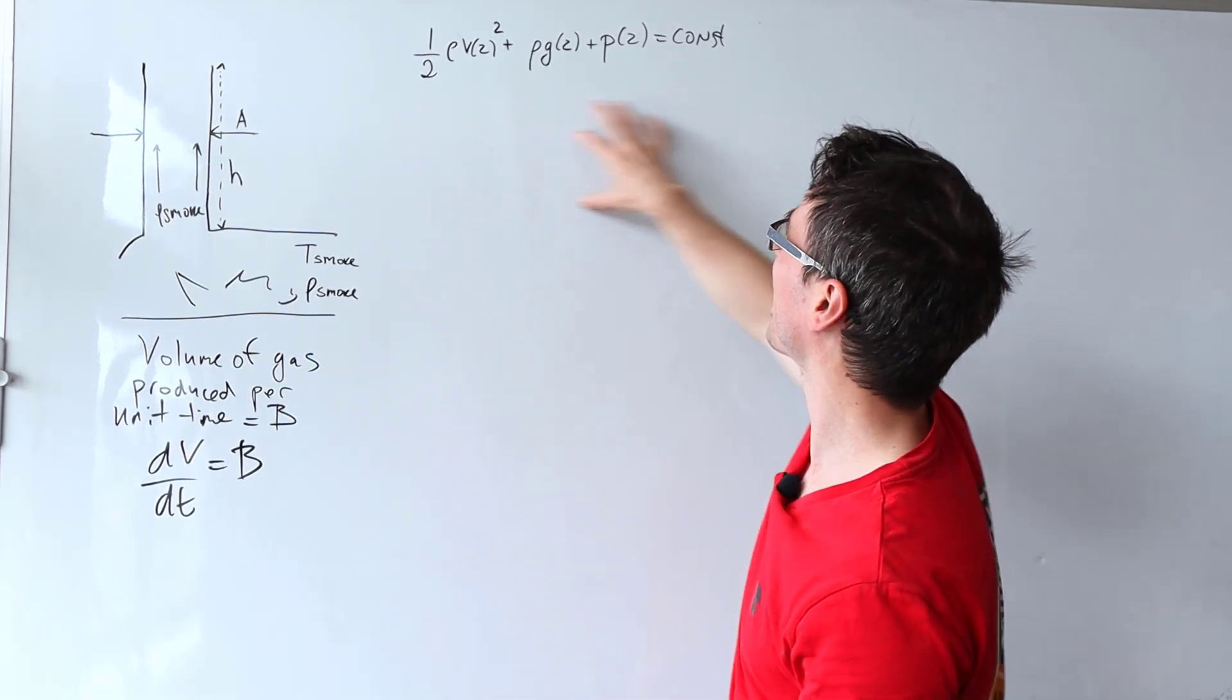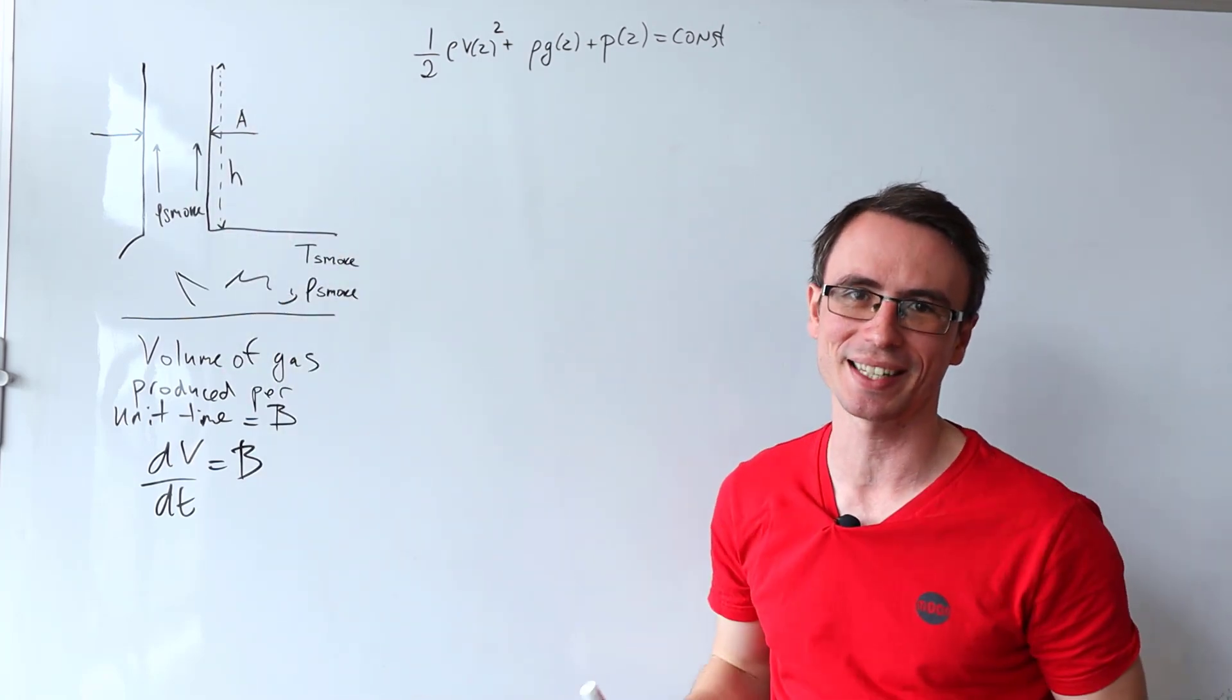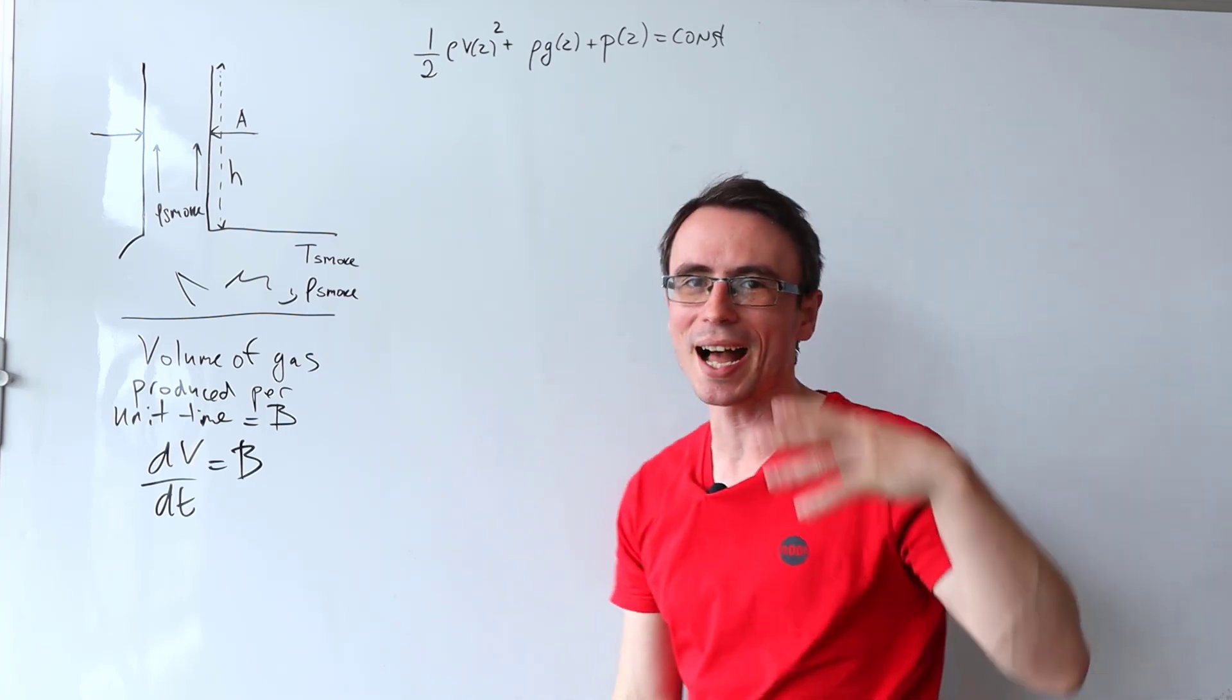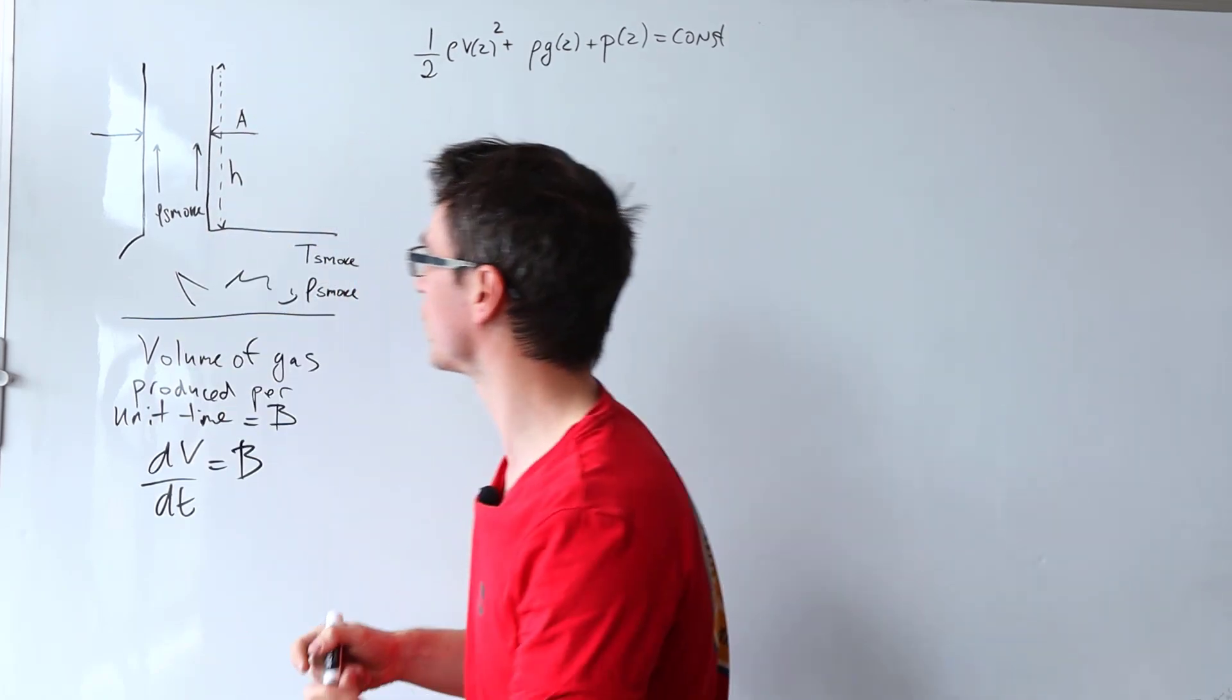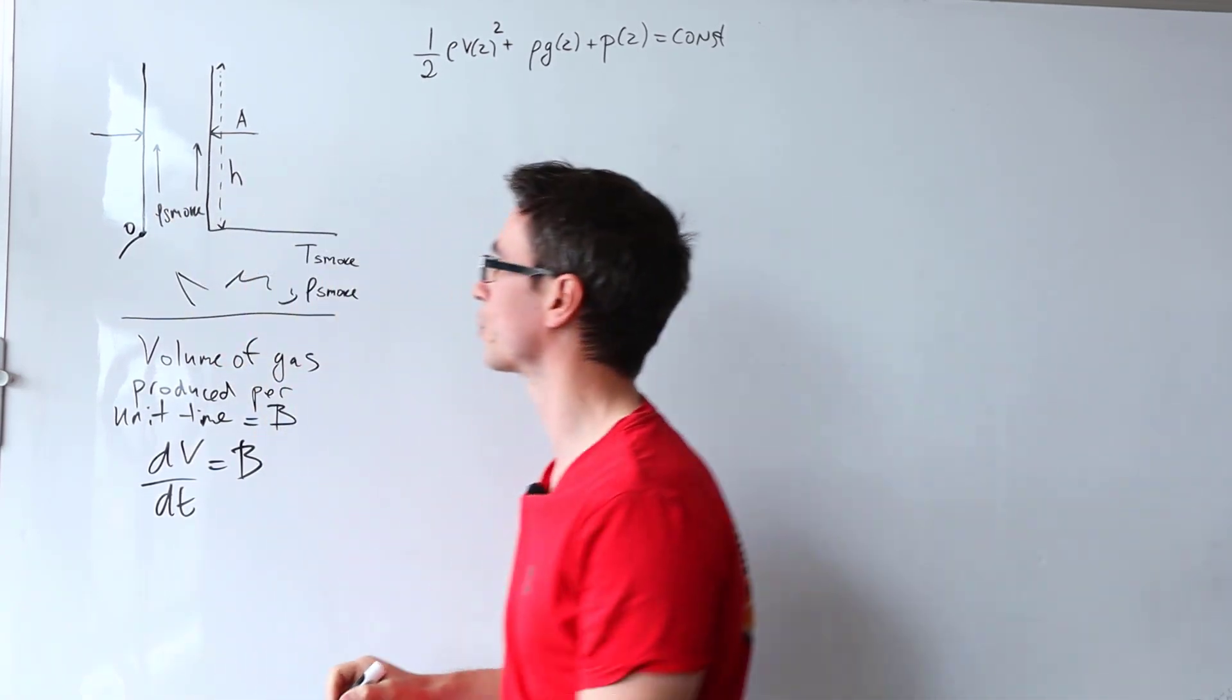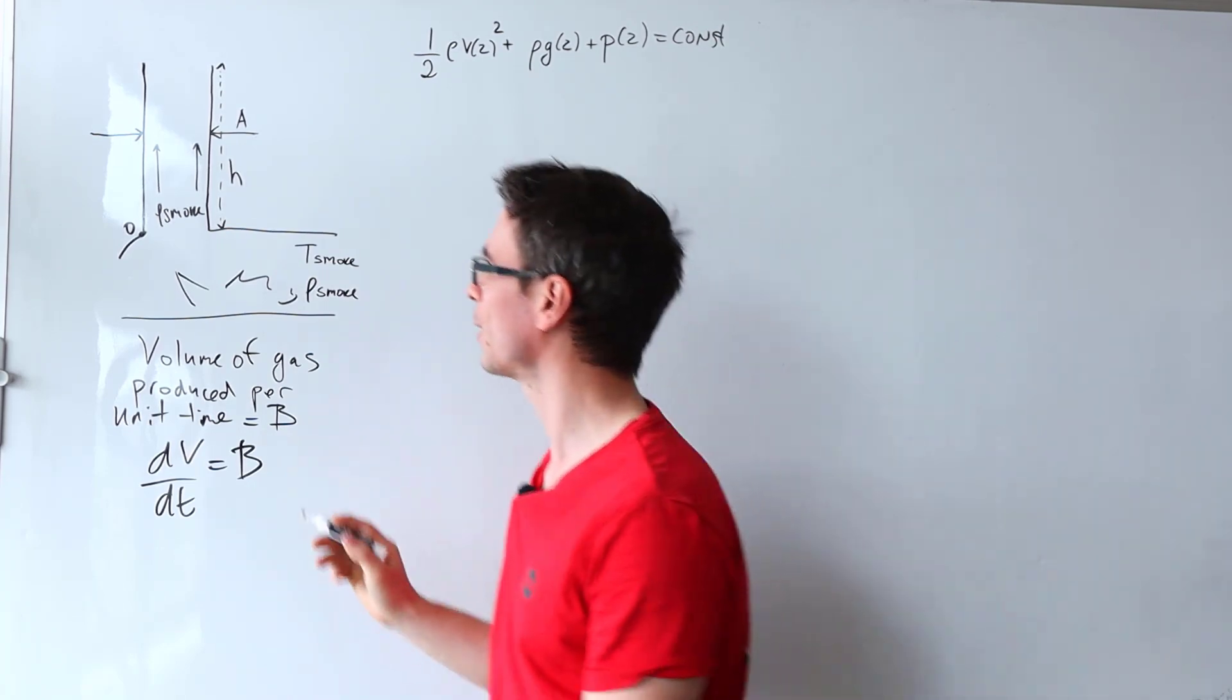So the idea is that we're going to apply Bernoulli's equation to try and calculate the speed at which this fluid is exiting the chimney. Now in order to do that, we're going to carefully look at two points. One point will be at a height h above this zero point. So let's take this point here to be h equals zero, and then another one will not quite be at the zero point but just a little bit below it.